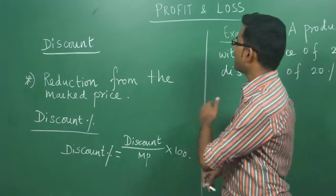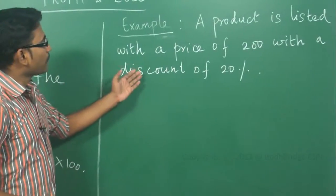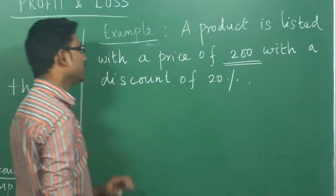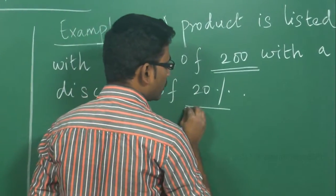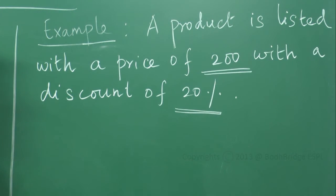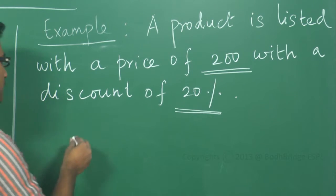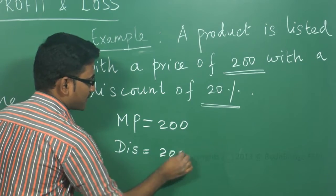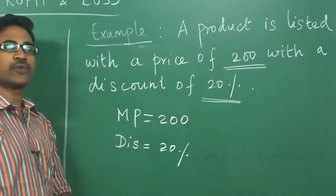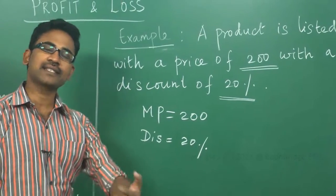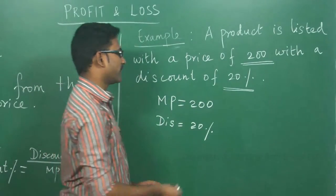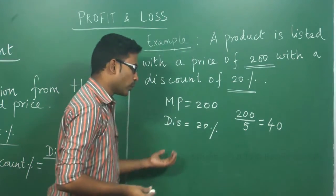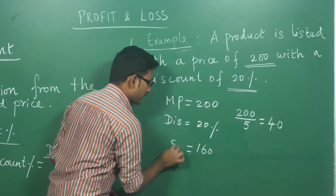Let me explain with an example. A product is listed at a price of 200 rupees — this is the market price — with a discount of 20 percentage. You are going to pay only 80 percentage of the market price because 20 percentage is discounted. Taking 20 percentage of 200 is one-fifth of the value, that is 40 rupees, so you are going to pay only 160 rupees, which is the selling price.